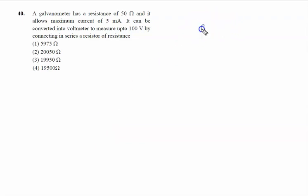A galvanometer has a resistance of 50 ohm and it allows maximum current of 5 milliampere, means full scale deflection current is 5 milliampere, so 5 × 10 to the power minus 3 ampere.